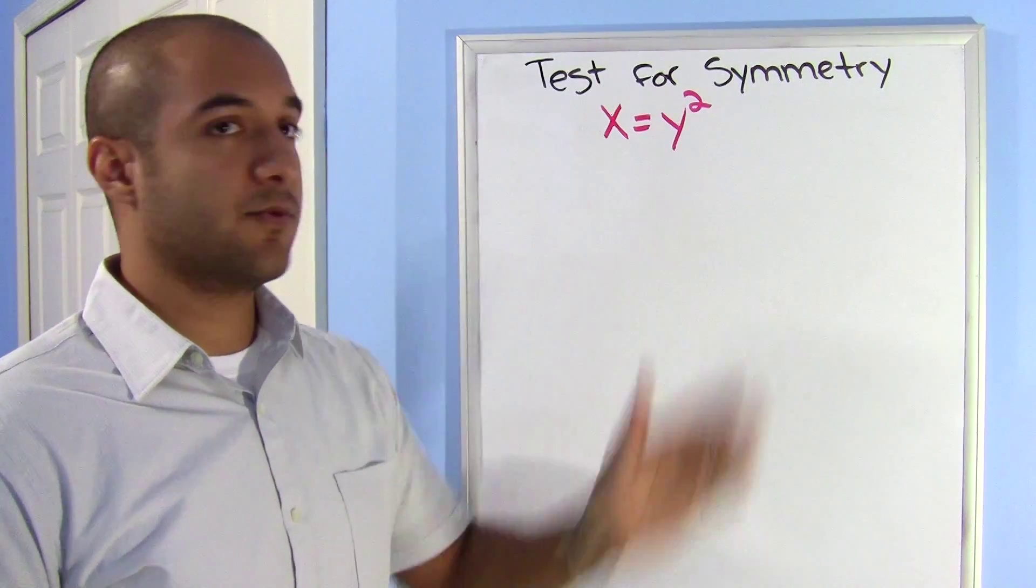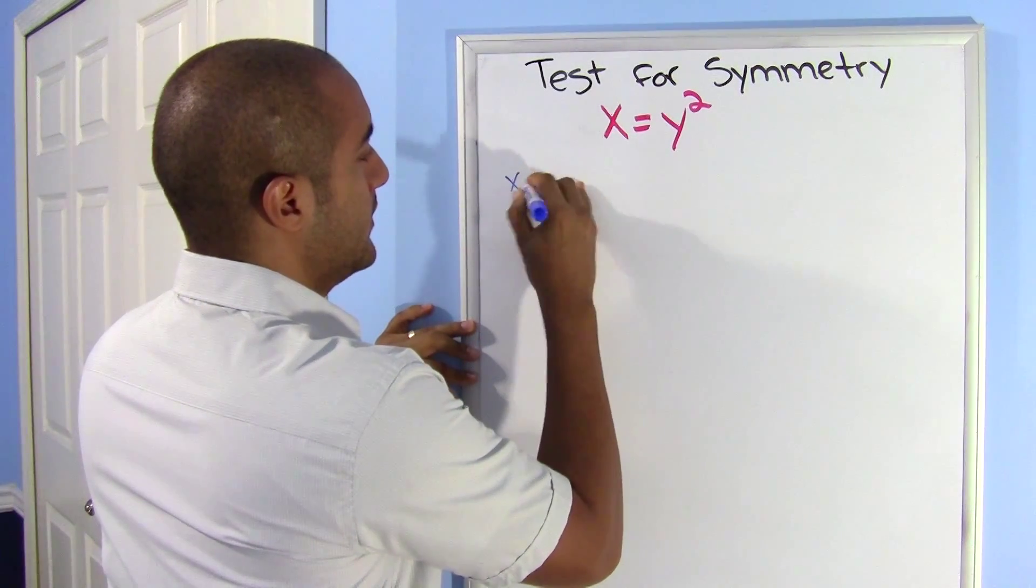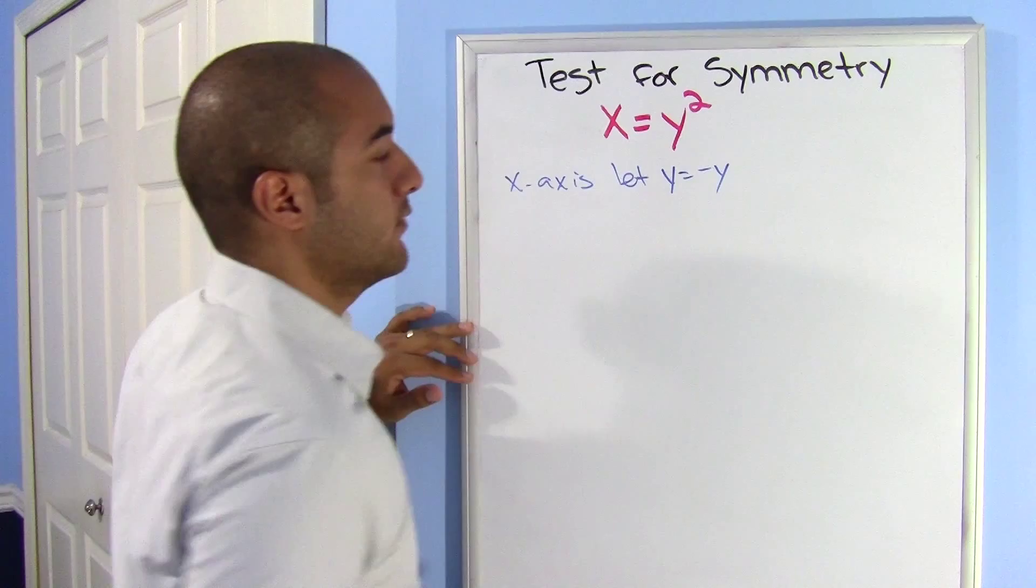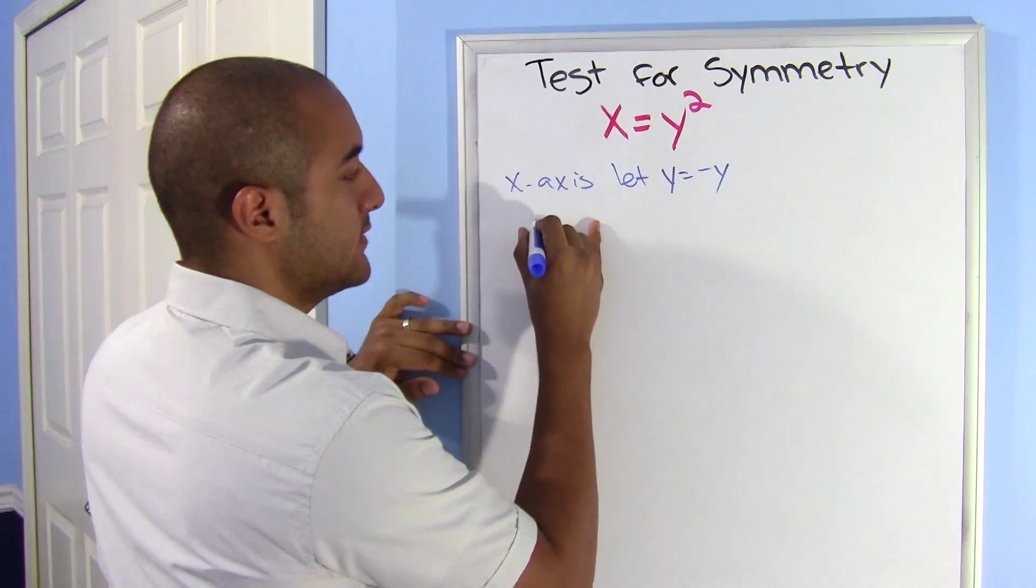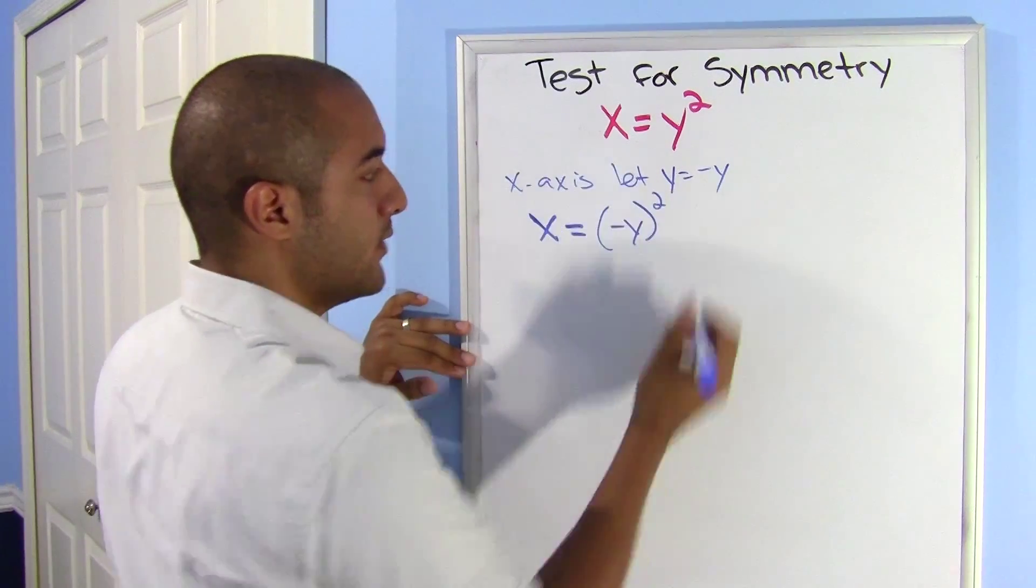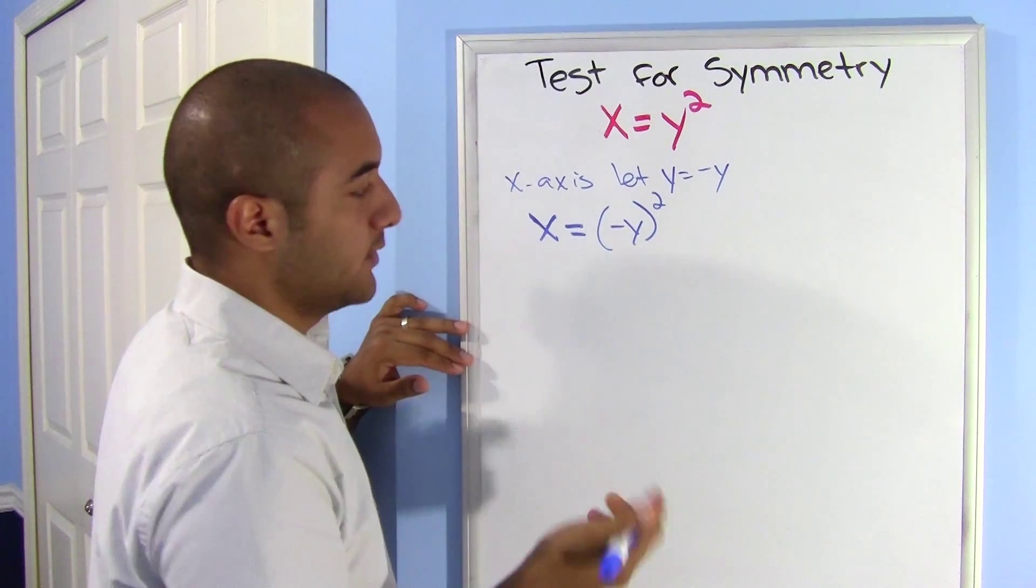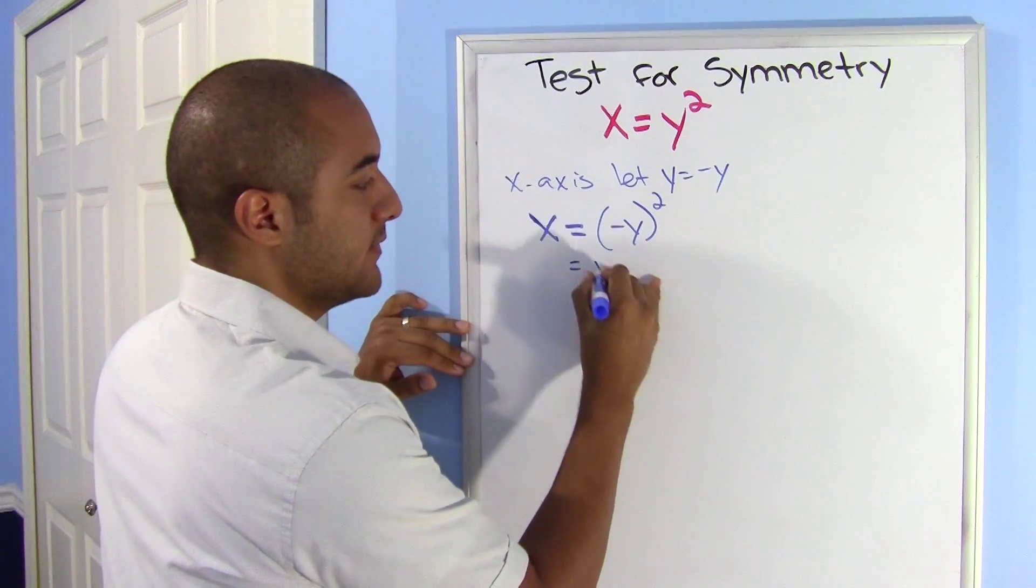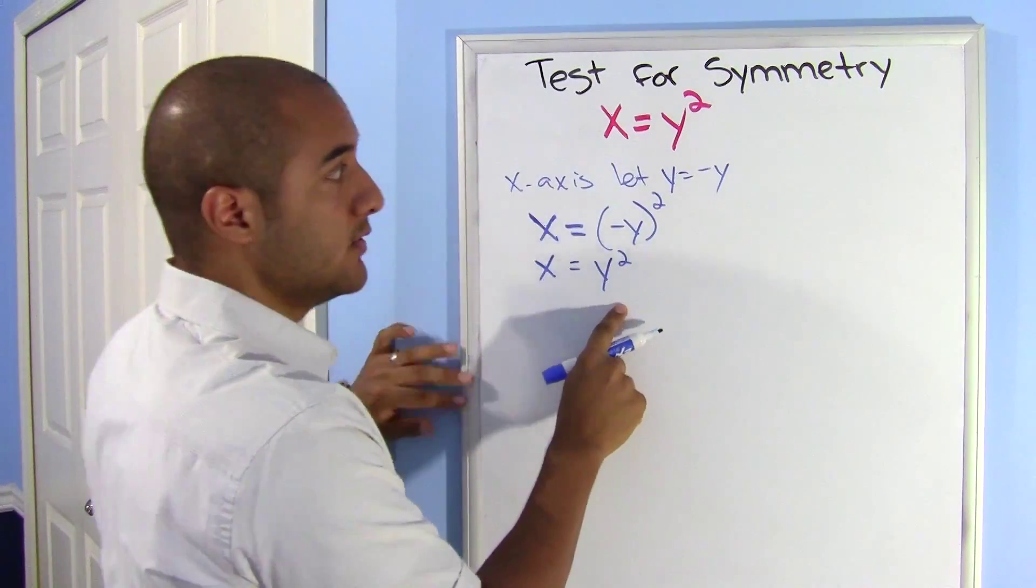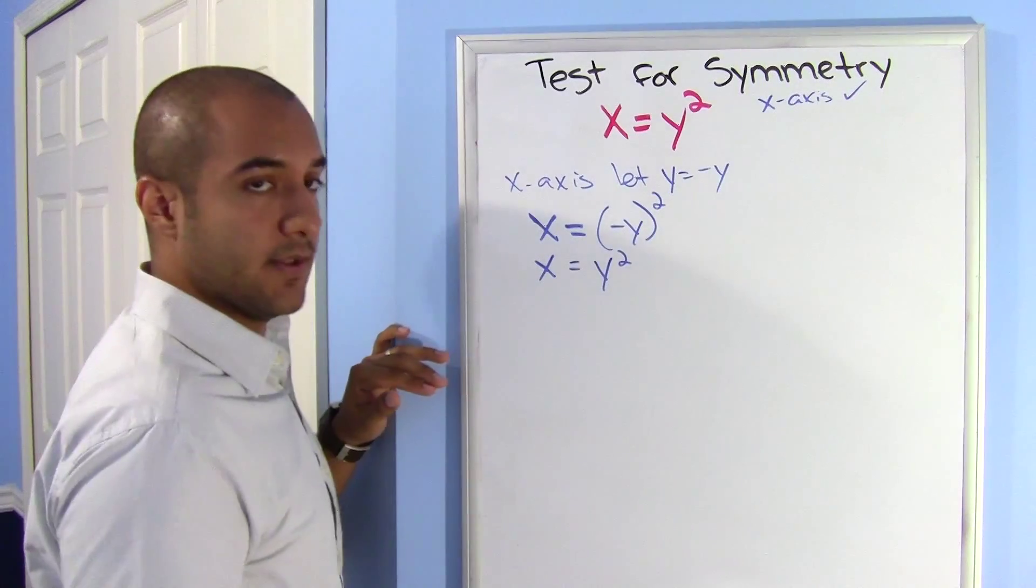Alright, the first one I'll try out is this one, x equals y squared. And first I'll test for the x-axis. So for the x-axis, I let y equal to negative y. So let me put that in there. This will say x equals negative y squared. Now I know that when a negative number is squared, I get a positive number. So this actually just means y squared. And isn't this the original equation? Yeah. So right now we know that this one is symmetric about the x-axis. Let's try the other ones.